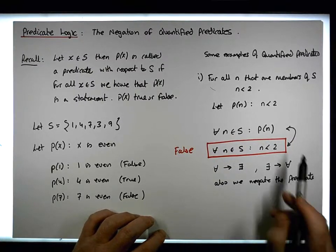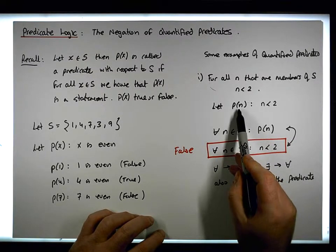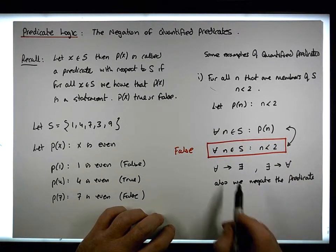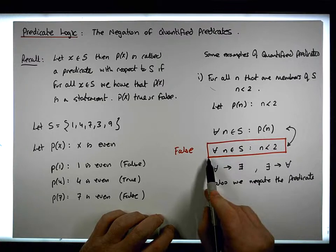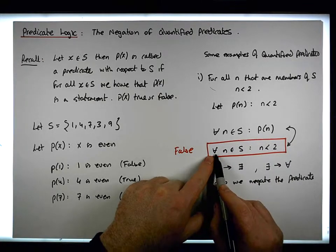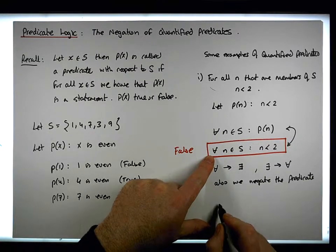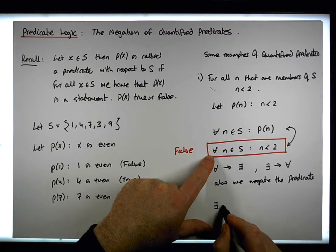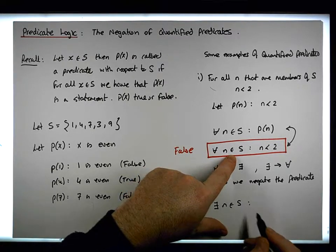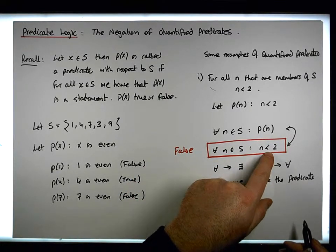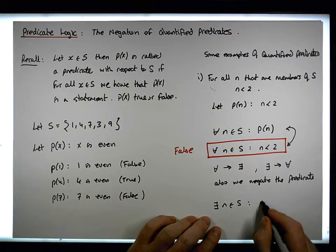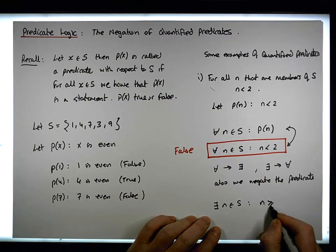What do I mean by negating the predicate? We negate P of n. So in this situation, if I was to find the negation of this particular quantified predicate, 'for each and every' goes to 'there exists.' So this becomes: there exists an n that's an element of s, such that — now we negate the predicate — so instead of n less than 2, we have that n is greater than or equal to 2.